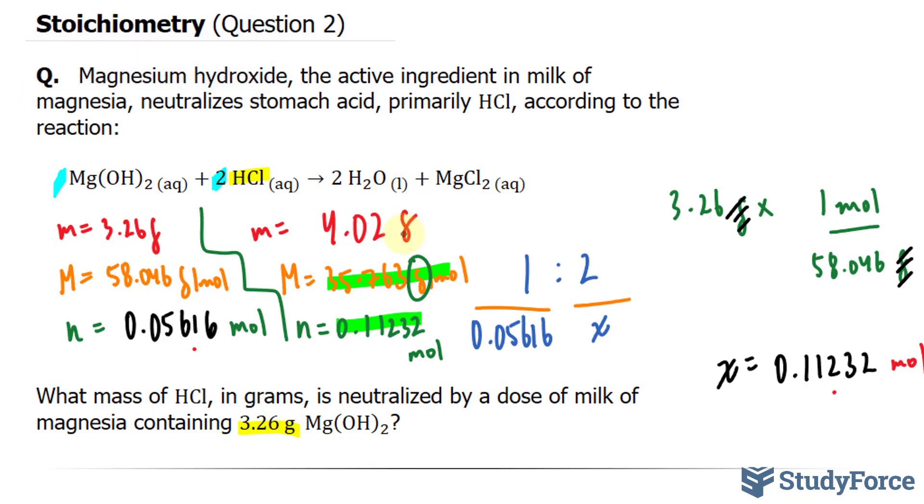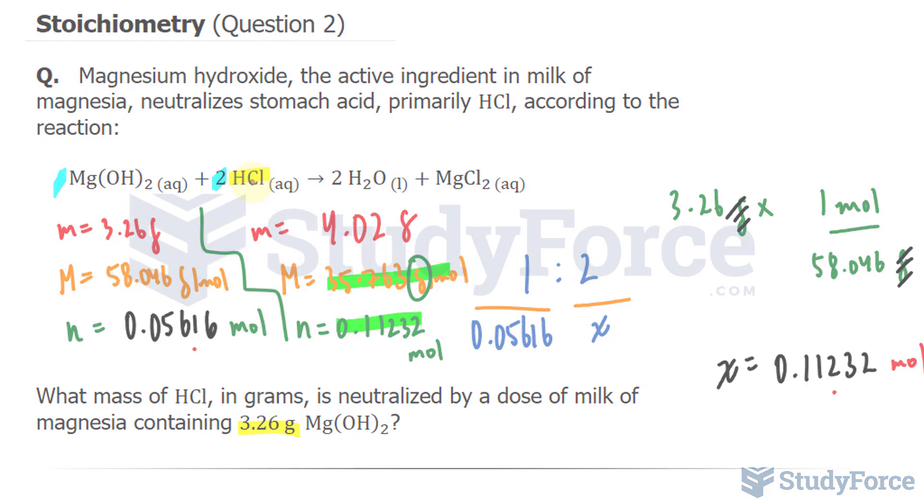What this number means is that if we start with 3.26 grams of magnesium hydroxide, 4.02 grams of hydrogen chloride, or in other words hydrochloric acid, is neutralized. And there you have it. That is how to solve stoichiometry problems. Make sure to watch yet another video where we tackle another example.